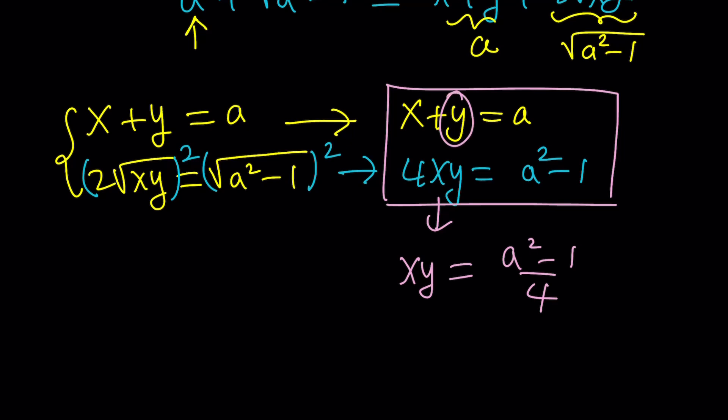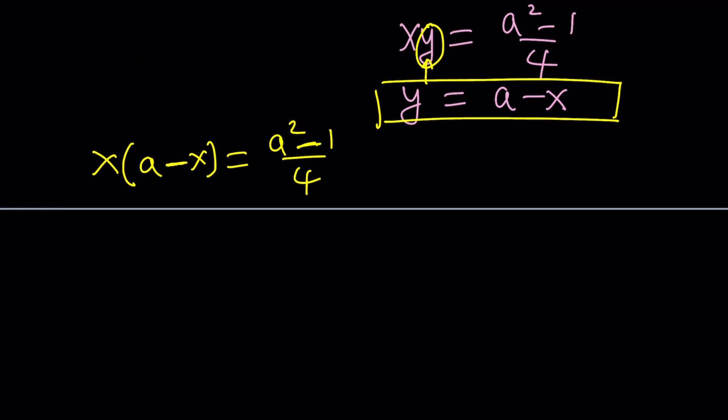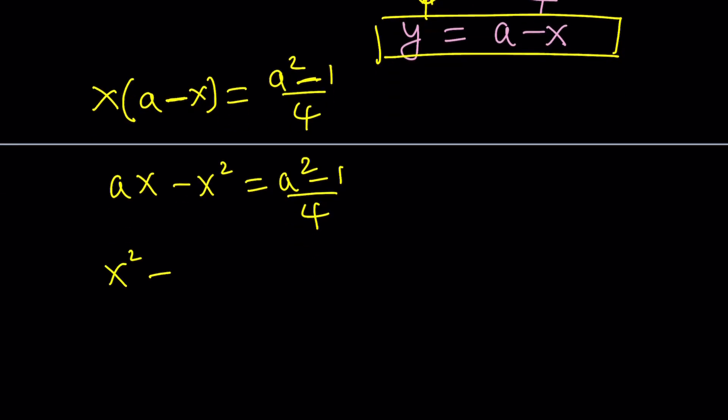And from here, I can actually isolate and solve for y. Write the y as a minus x. And then I can substitute. Make sense? So let's do it. Plug in a minus x for y. Set it equal to a squared minus 1 over 4. Remember, we're solving for x and y. But x and y are interchangeable because of the plus sign. So it doesn't matter. Let's distribute and turn this into a full quadratic. ax minus x squared is a squared minus 1 all over 4. And then we can write this as x squared minus ax plus a squared minus 1 all over 4 equals 0.